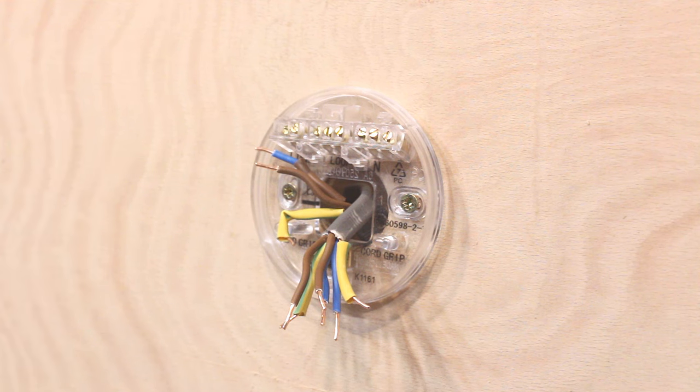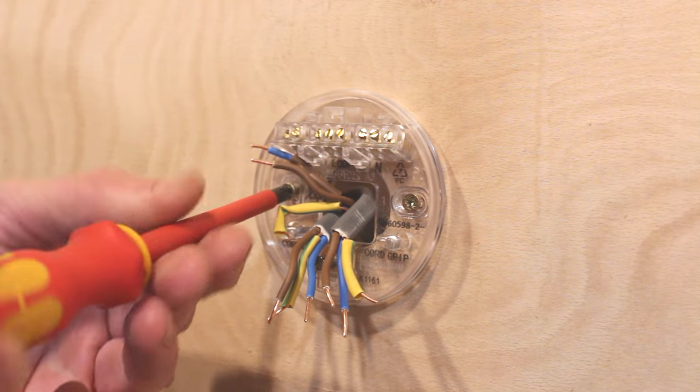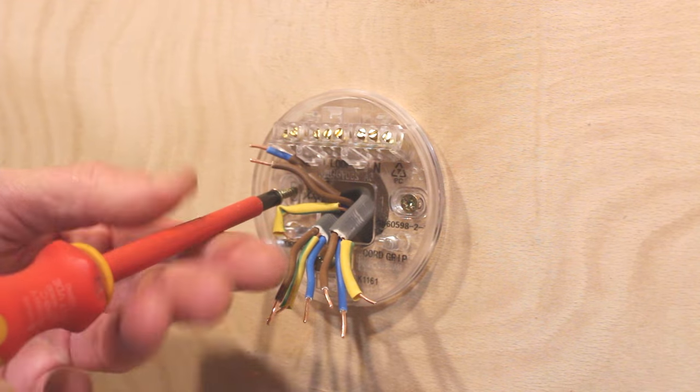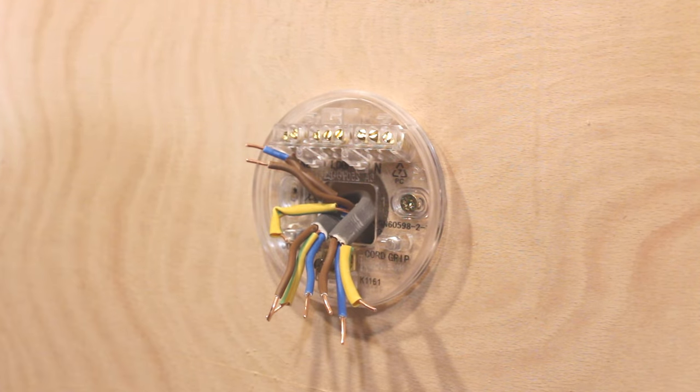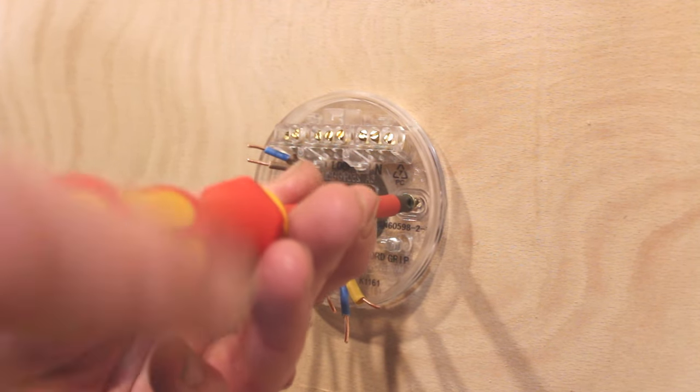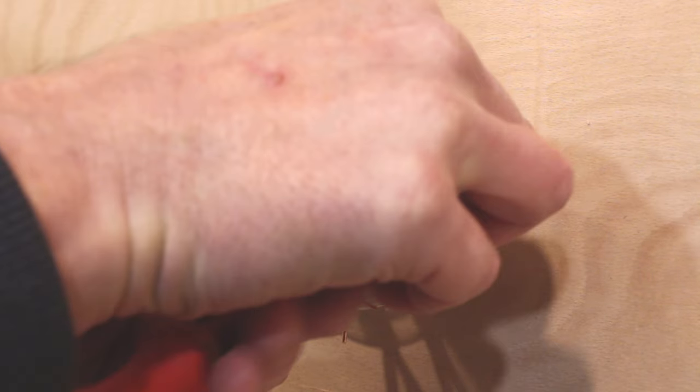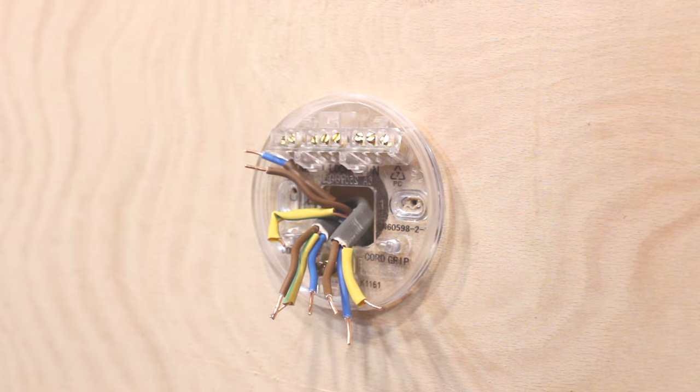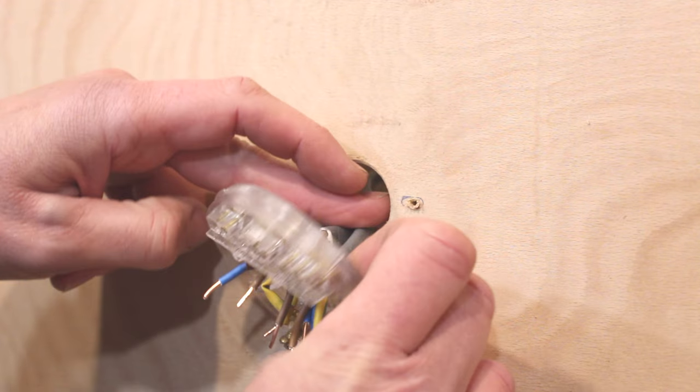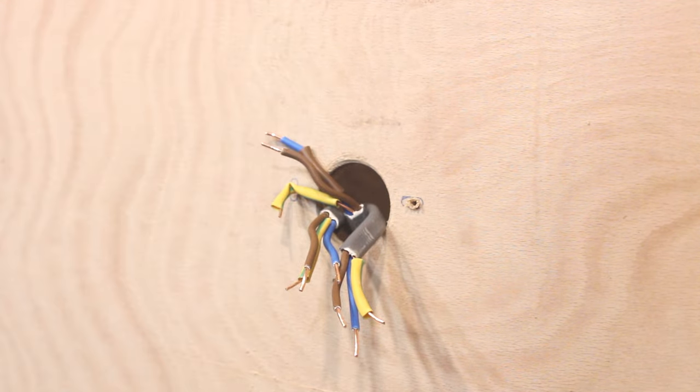So lastly we want to just take off the ceiling rose itself by unscrewing the screws here and the other one. Like so. And then just gently grabbing hold of the ceiling rose and feeding the wires back through. Perhaps holding the wires so they don't disappear. There we have it.